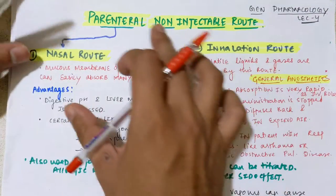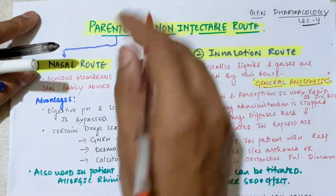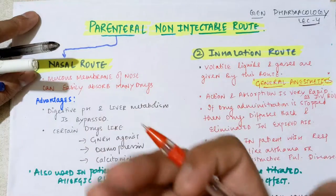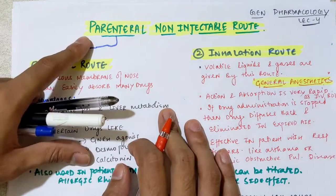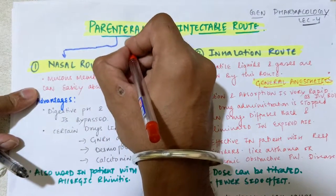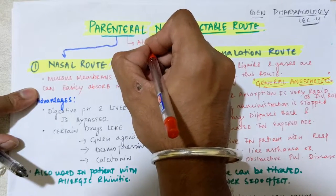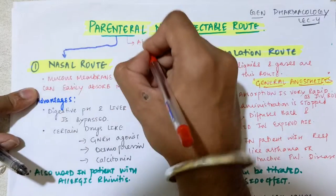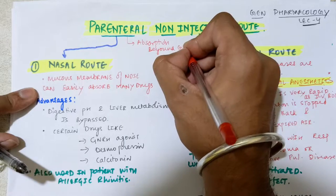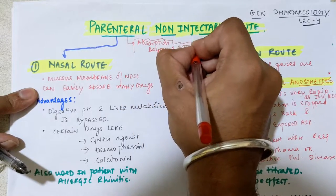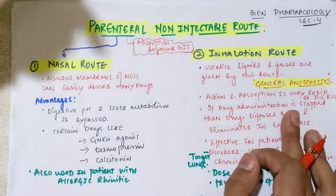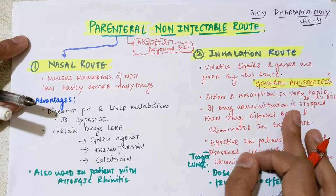Let's start with the parenteral non-injectable routes. The meaning is clear — the drug is not administered through injection, but it still comes under the parenteral section. As I mentioned in the first video, parenteral means absorption away from the GIT — absorption beyond the GIT. So it will be bypassing the liver, and bioavailability will be high compared to the enteral routes such as oral and rectal.